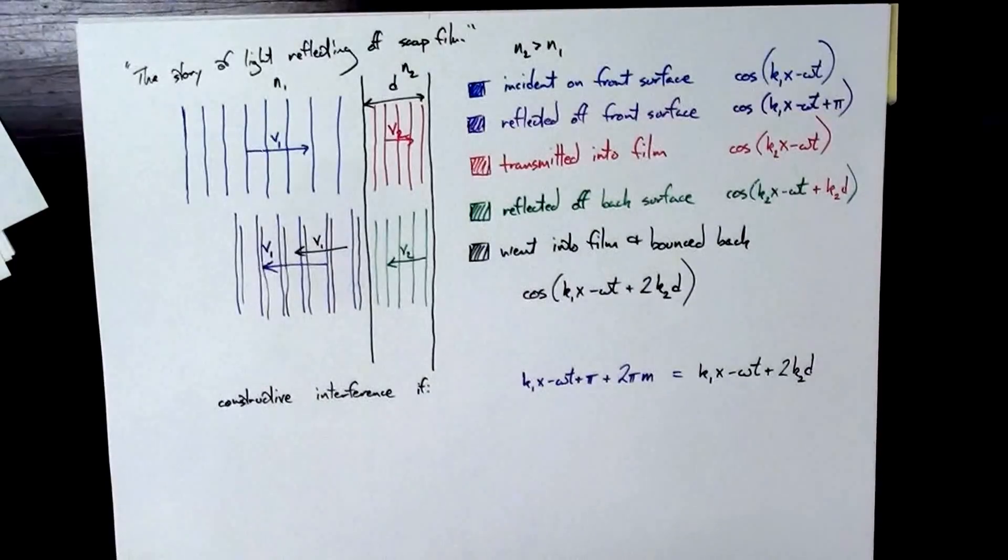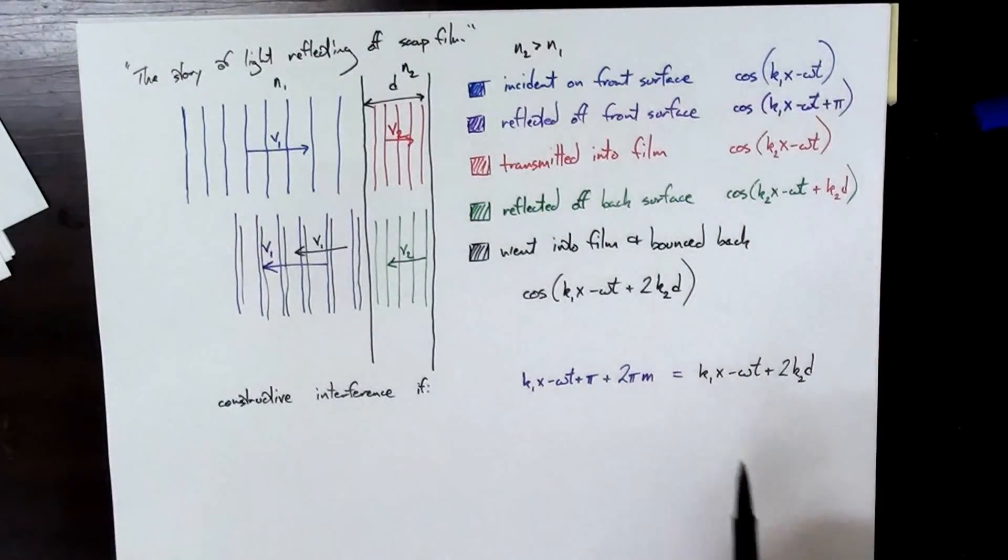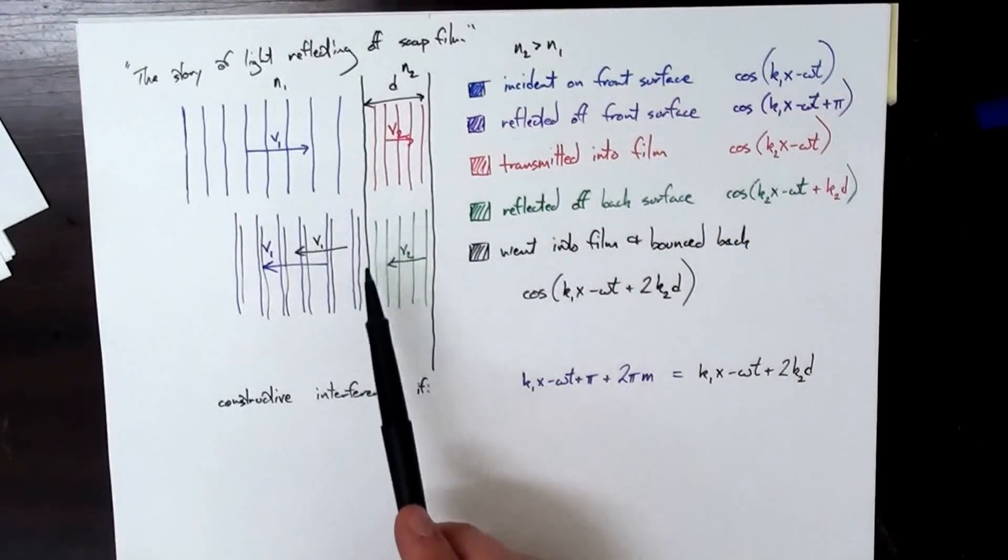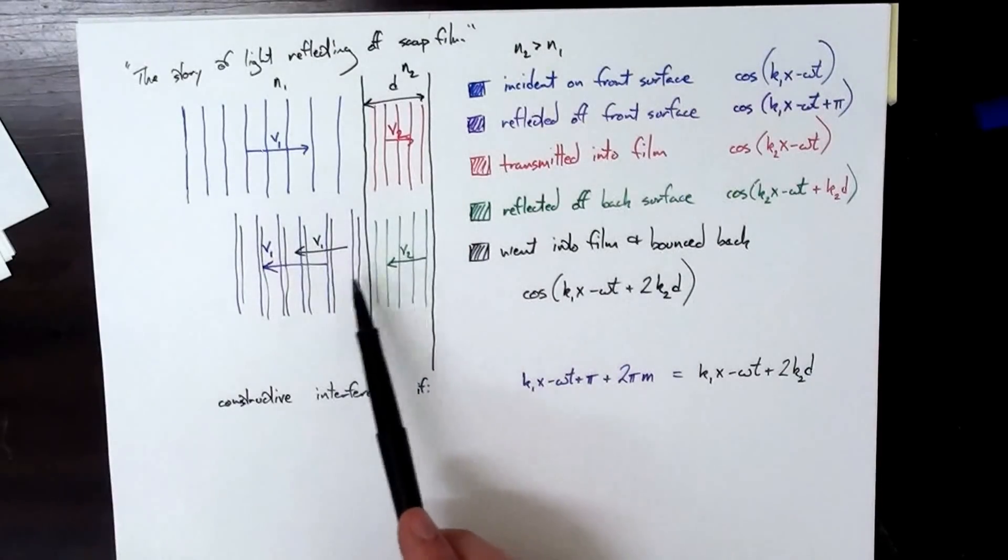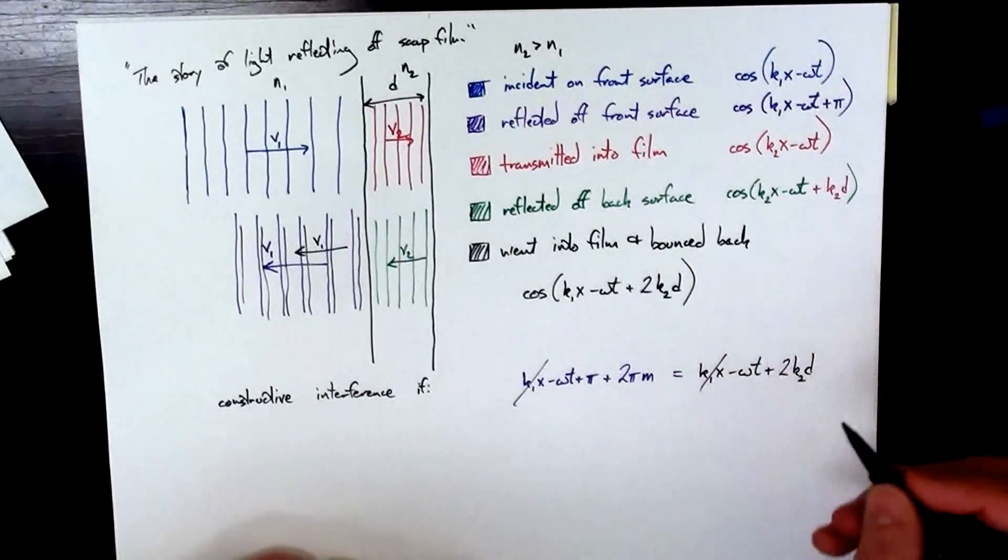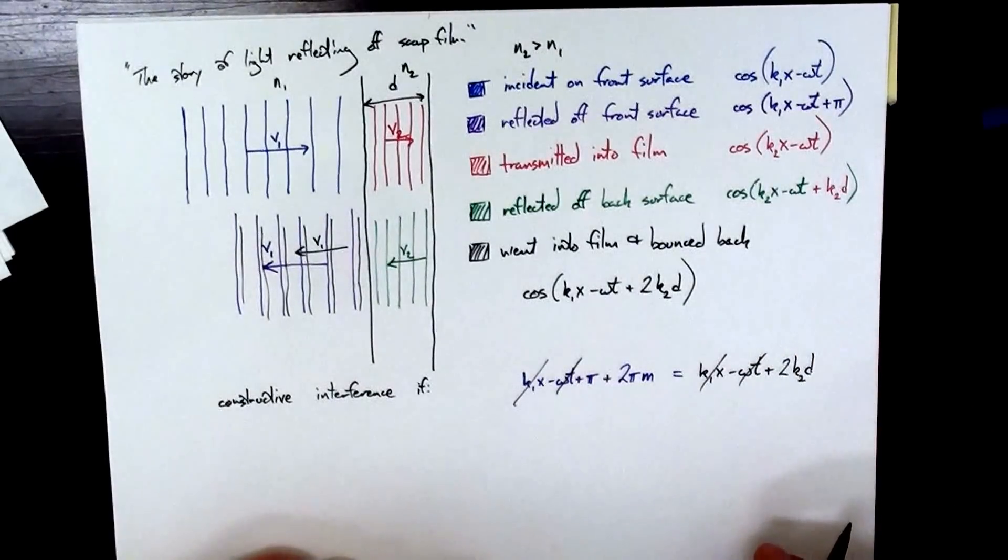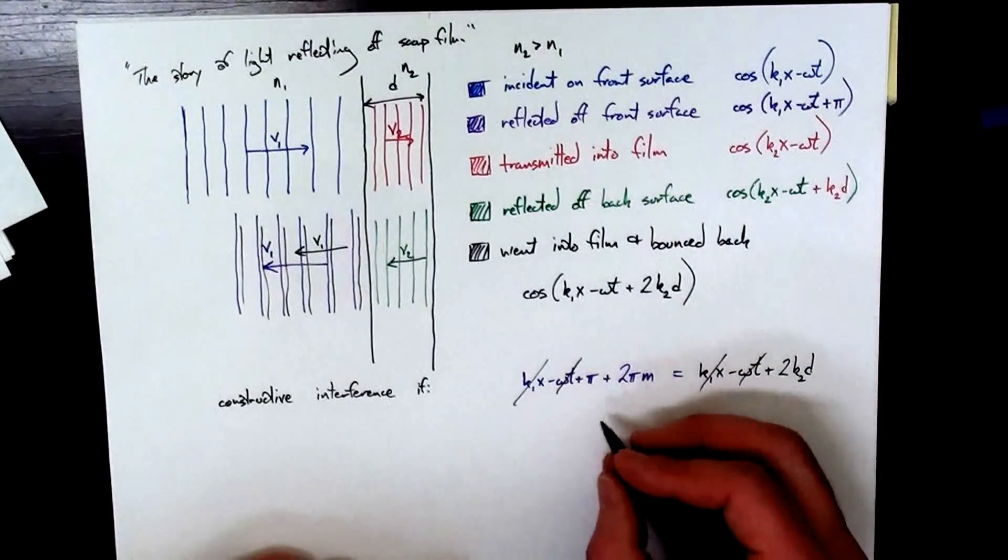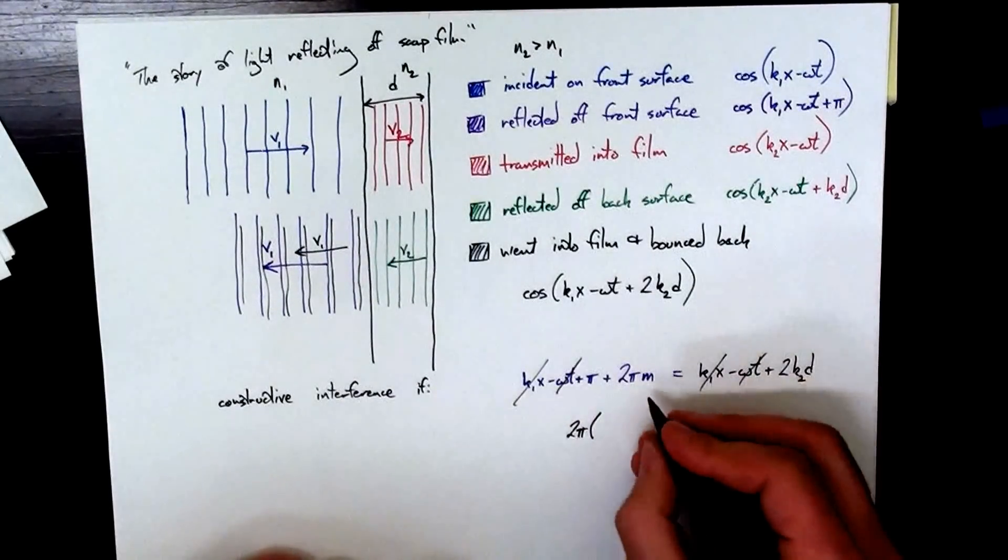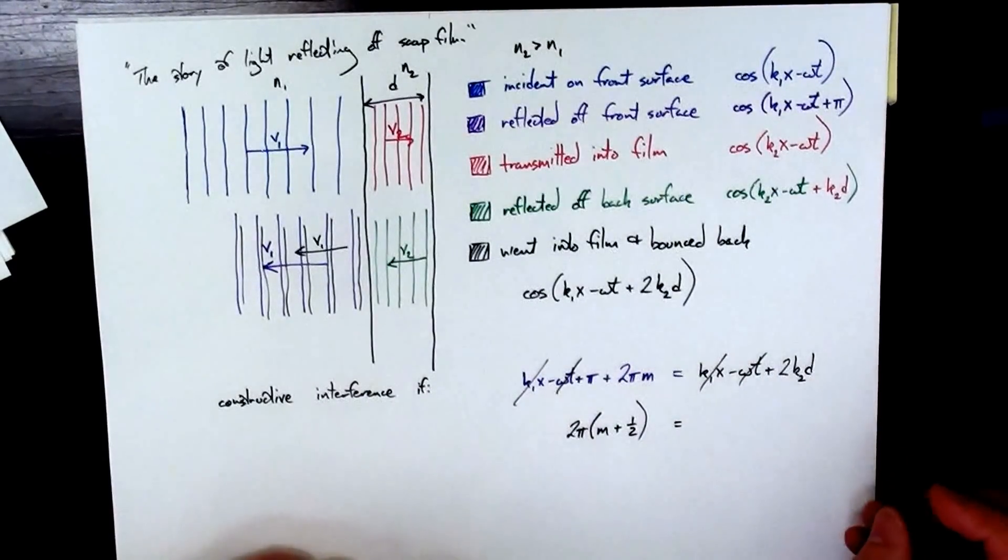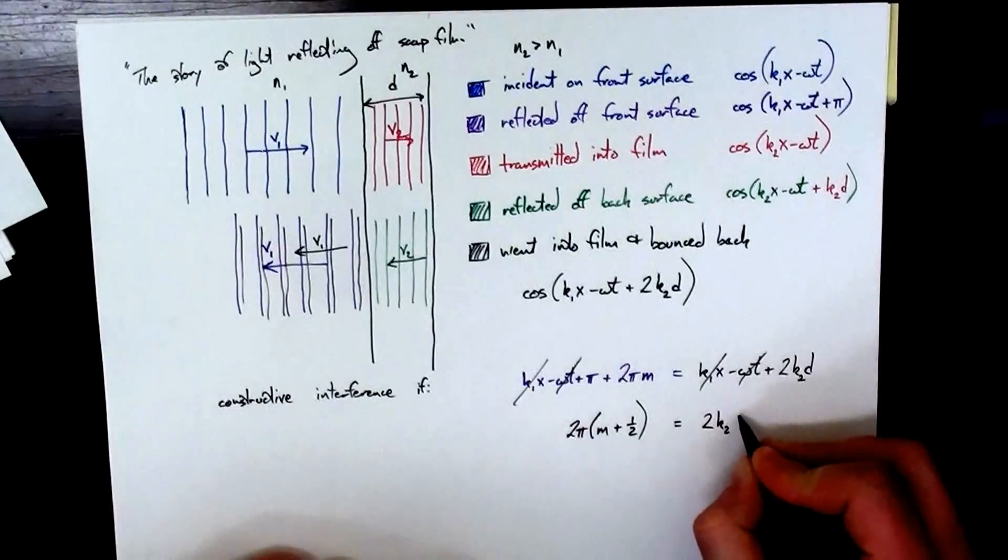So if that is equal to this, then I get constructive interference. For any m, where m is an integer, if this is fulfilled, then I'm going to get constructive interference, which means my light that's gone into the surface won't cancel out the light that bounced off the front surface. Well, I can cancel out, I've got like things on both sides of the equation, so I can cancel these out. So now I'm going to factor out pi. In fact, I'll factor out the 2 pi. So I get 2 pi m plus 1 half is equal to 2k2 times d.